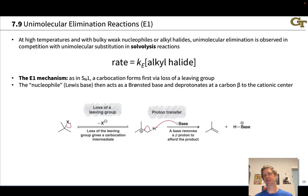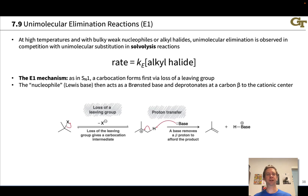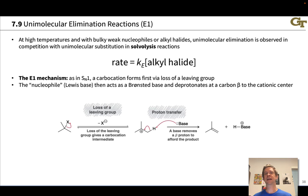In the E2 elimination reaction, deprotonation and loss of the leaving group happen at the same time. This is generally because the anionic species used is a strong base, strong enough to deprotonate before the leaving group is completely gone. When the nucleophile or base is a weaker species, such as a neutral alcohol or water, it's not a strong enough base to remove a proton before the leaving group departs.